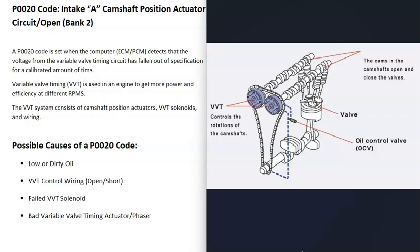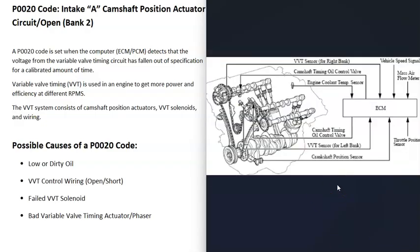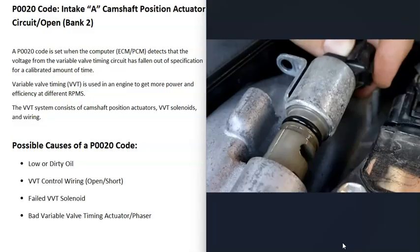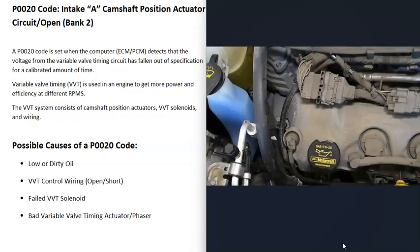The next possible cause is the wiring going to the variable valve timing system. This will vary depending on the vehicle and year, so you'll need to get a wiring diagram for your specific vehicle. Basically, these wires run from the computer, which controls the whole variable valve timing system. This mainly means the wiring going to the variable valve timing solenoids — there's typically an intake and an exhaust solenoid, and the wiring to those solenoids is the main thing to check.